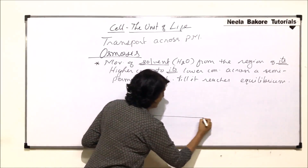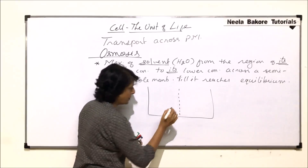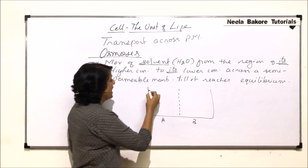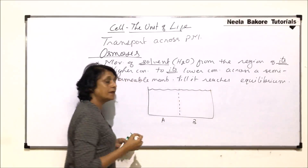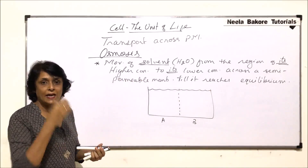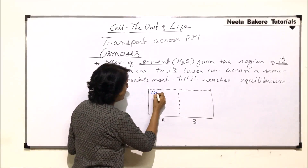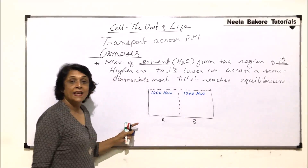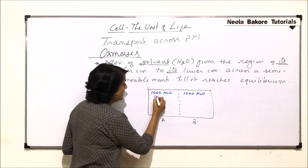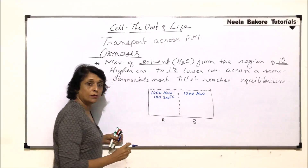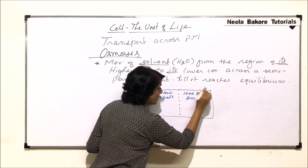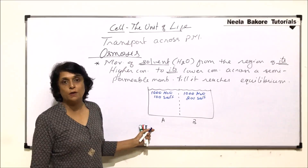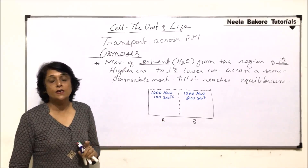To understand this, let's draw a vessel separated by a semi-permeable membrane — compartment A and compartment B. Both compartments are filled with water; let's say there are 1000 water molecules in each. In compartment A we add 100 salt molecules, and in compartment B we add 200 salt molecules. We want to know: in which direction will water movement take place — from A to B or B to A?